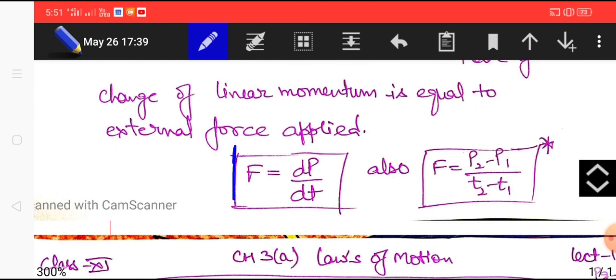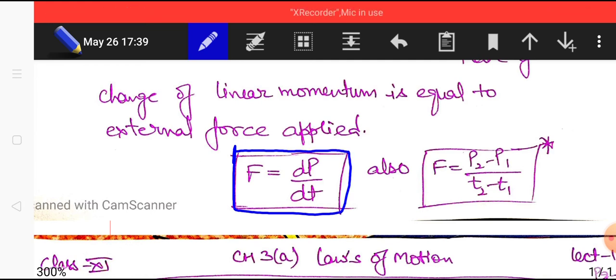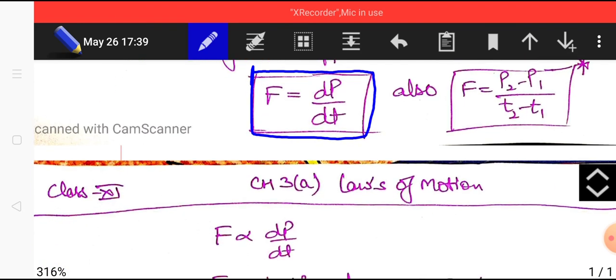So F equals dp by dt and for some constant force we can also write F equals p2 minus p1 divided by t2 minus t1.